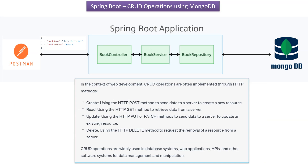In the context of web development, CRUD operations are often implemented through HTTP methods. For creating a new resource, we use HTTP POST method. For retrieving a resource, we use HTTP GET method. To update an existing resource, we use HTTP PUT or PATCH method. To remove a resource, we use HTTP DELETE method. CRUD operations are widely used in database systems, web applications, APIs, and other software systems for data management and manipulation.